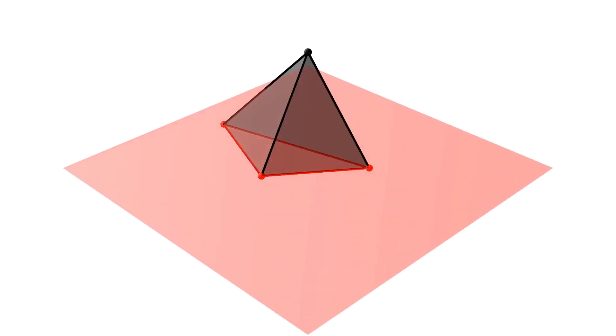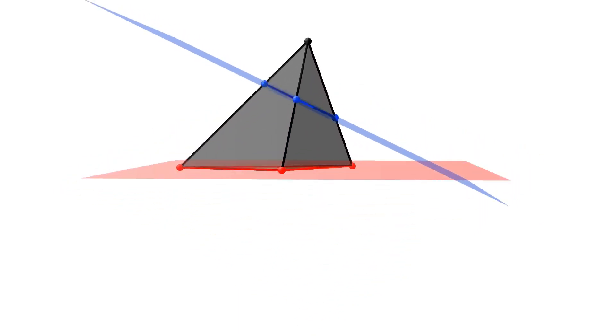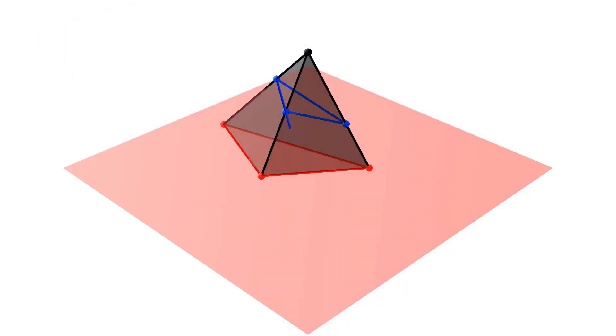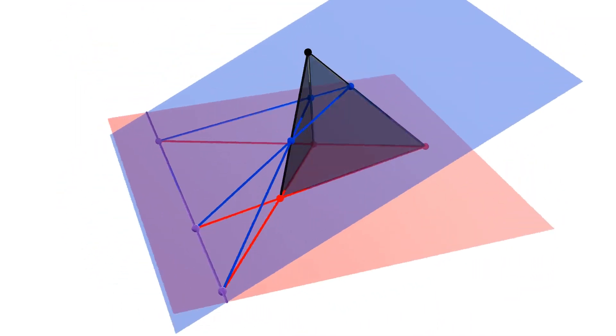Forgetting about polars for a moment, consider a simple setup in three dimensions. A tetrahedron is cut by a blue plane. Their intersection is the blue triangle. Now intersect the extensions of the red and the blue segments. Those are the purple points. They all lie in the intersection of the red and the blue plane, which means that they are on one line.